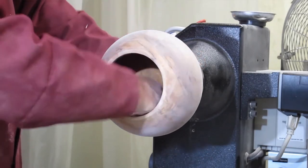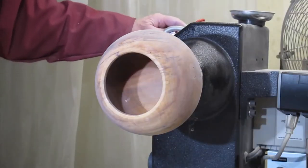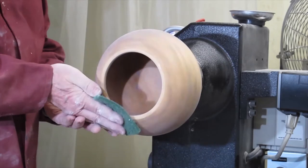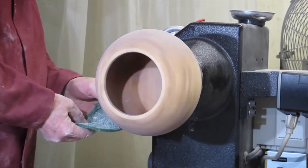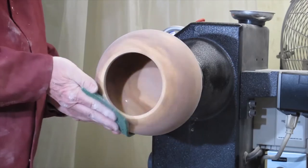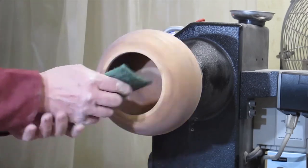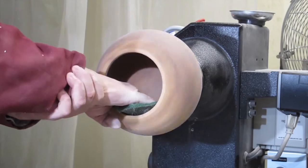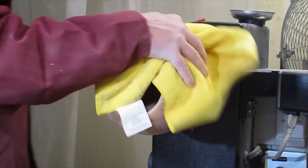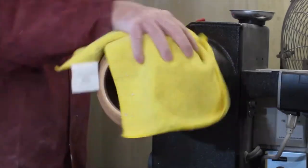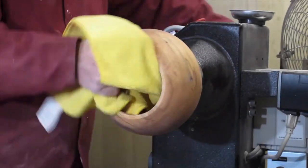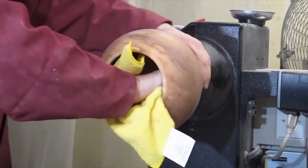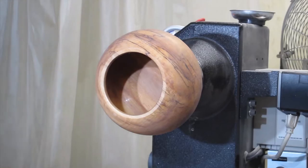Once I've completed the sanding with the 220 grit, I'll convert to the green Scotch-Brite pads just to clean it up a little bit. And finally, I will use a microfiber cloth to wipe all the dust off. It's then ready for the resin.